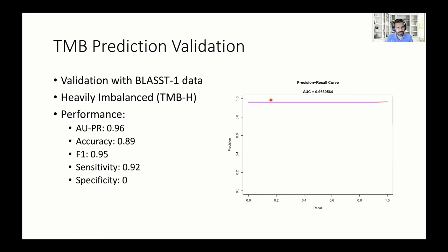Then we performed TMB prediction validation using the BLAST-1 cohort, using the same thresholds as the TCGA dataset. However, that yielded a fairly imbalanced dataset, mostly skewed towards TMB-high. For that reason, we used the precision-recall curve to evaluate performance and had pretty good AUPR, accuracy, and F1 scores. We have to keep in mind that it is a small and imbalanced dataset.